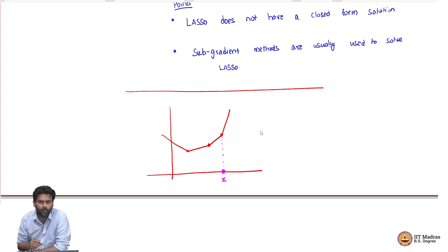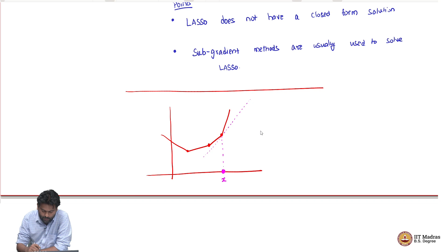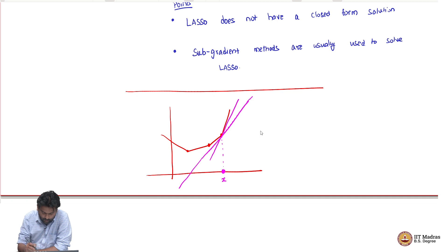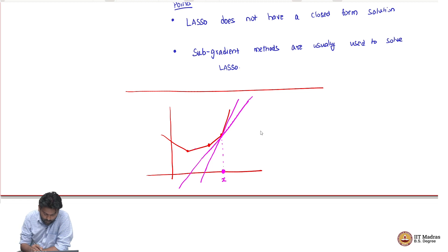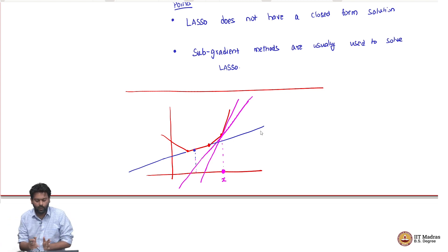A sub-gradient is some line — some way to approximate this function at that point — which completely lower bounds the function. For example, this is one sub-gradient, and here is another sub-gradient. As you can see, there are multiple sub-gradients at the same point. At a smooth point, the only sub-gradient is the tangent line itself — no other line can completely lower bound the function everywhere. At meeting points, there might be multiple valid lines, and those are called sub-gradients.